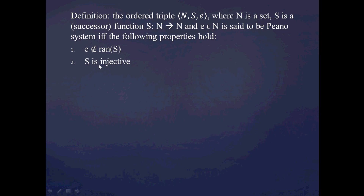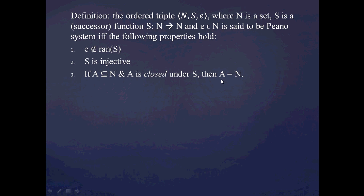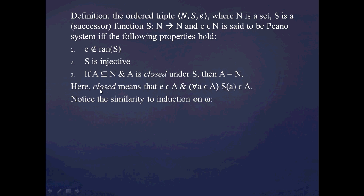And thirdly — and this is going to be similar to mathematical induction — if A is a subset of N, and A is closed under s, then A is equal to all of N. What does it mean to be closed under s? Here, closed means that if e is in A, and for all little a's in big A, s(a) is in A.